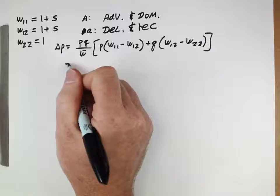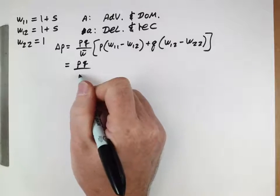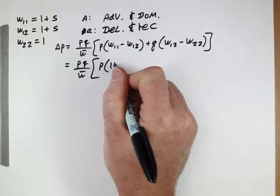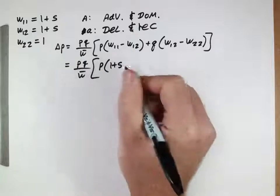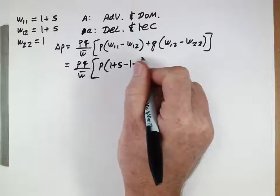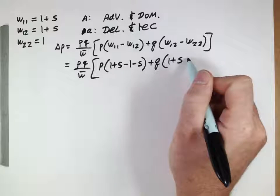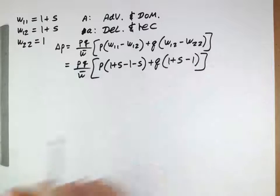So, let's plug some of our things in here. This PQW bar will stay the same. P, W11 was 1 plus S, minus this, so that's a minus 1 minus S, plus Q. W12 was 1 plus S, minus this.